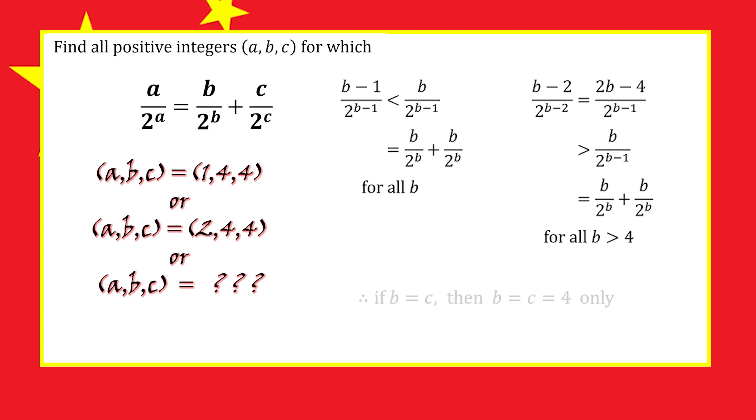So we've shown that if b equals c, the only way that works is if they're both equal to 4, giving us the triples (1,4,4) and (2,4,4).